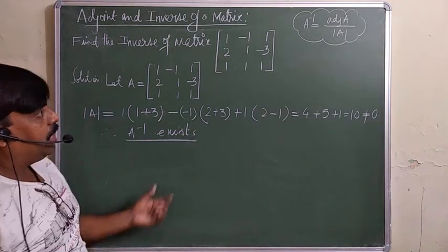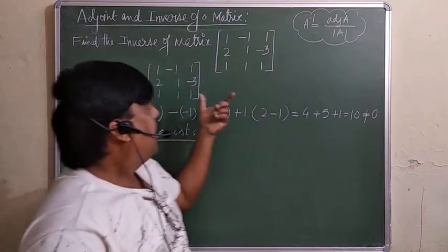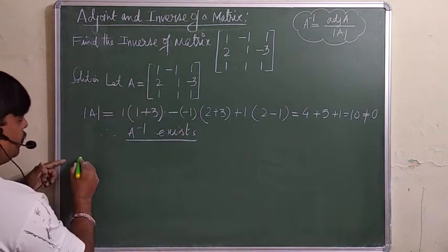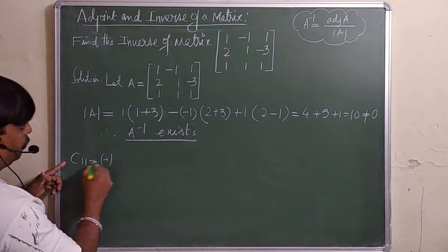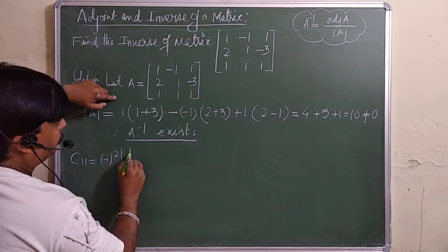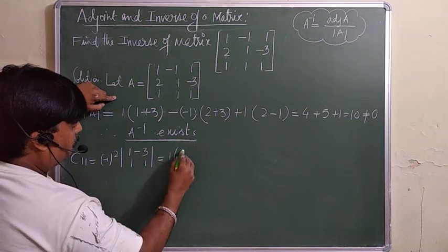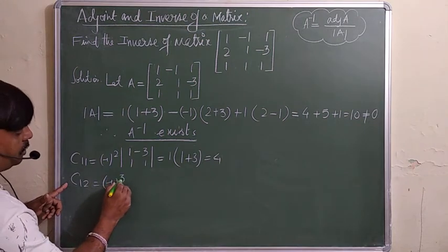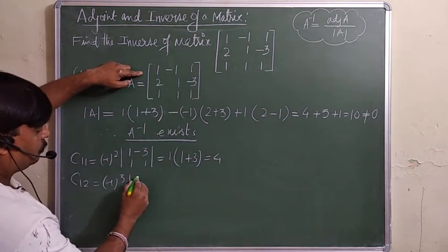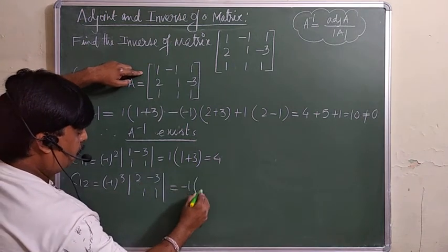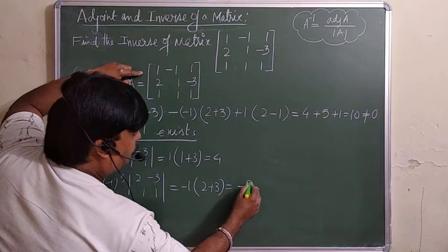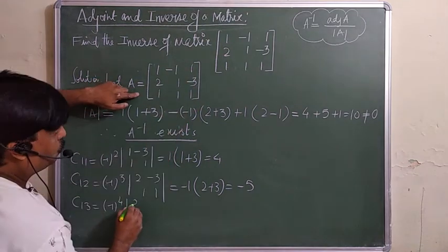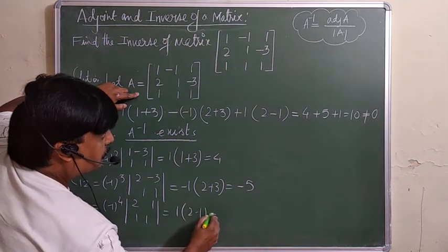To find A inverse, first compute adj(A) by finding all cofactors. C_11 = (−1)^2 × (1×1 − (−3)×1) = 1+3 = 4. C_12 = (−1)^3 × (2×1 − (−3)×1) = −1×5 = −5. C_13 = (−1)^4 × (2×1 − 1×1) = 1×1 = 1.